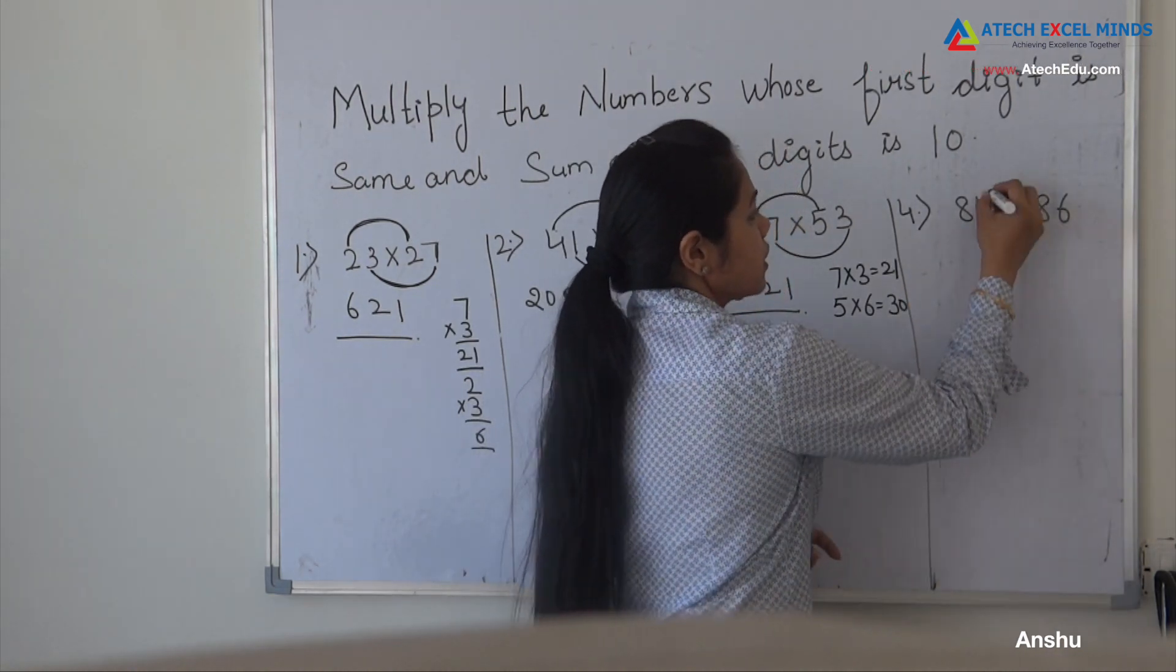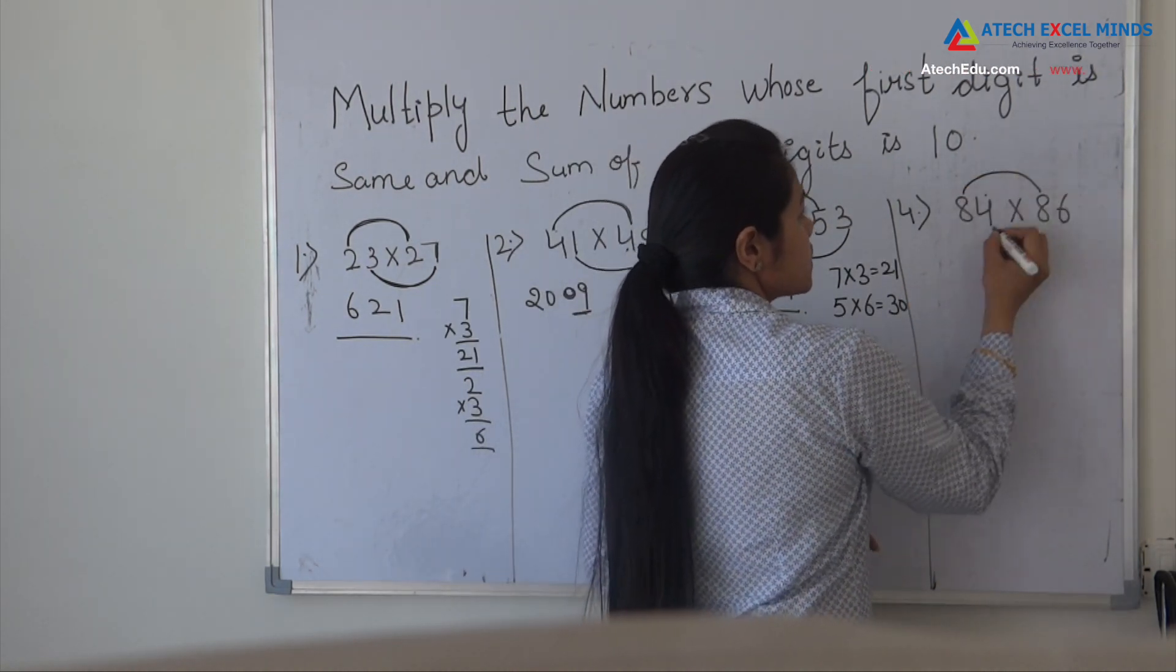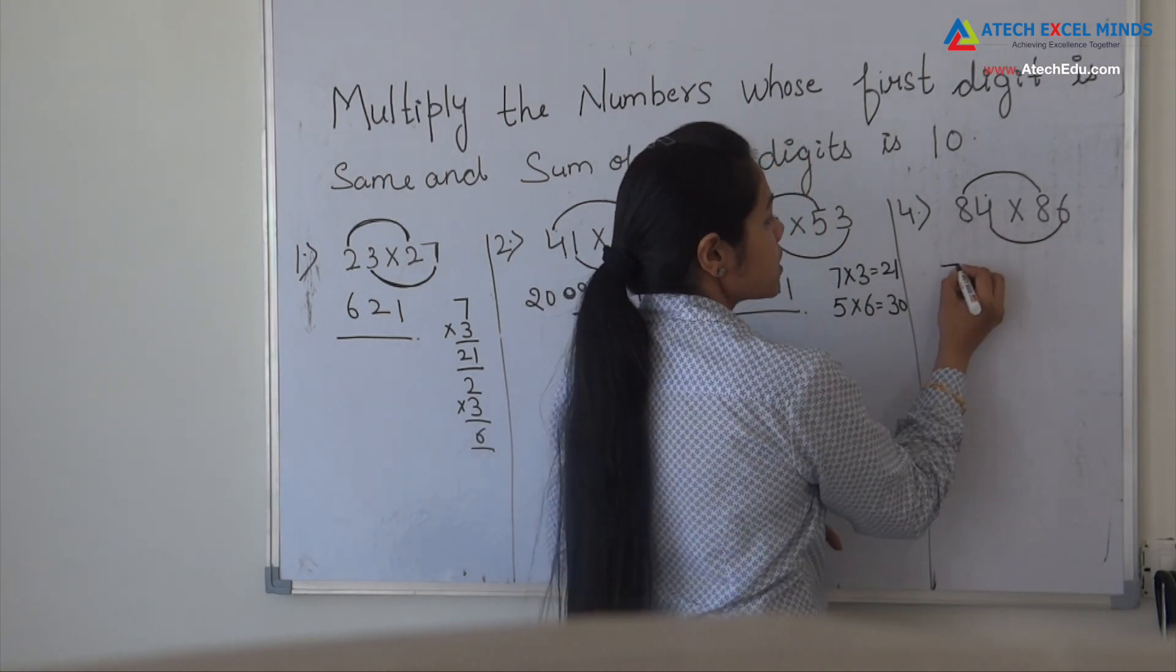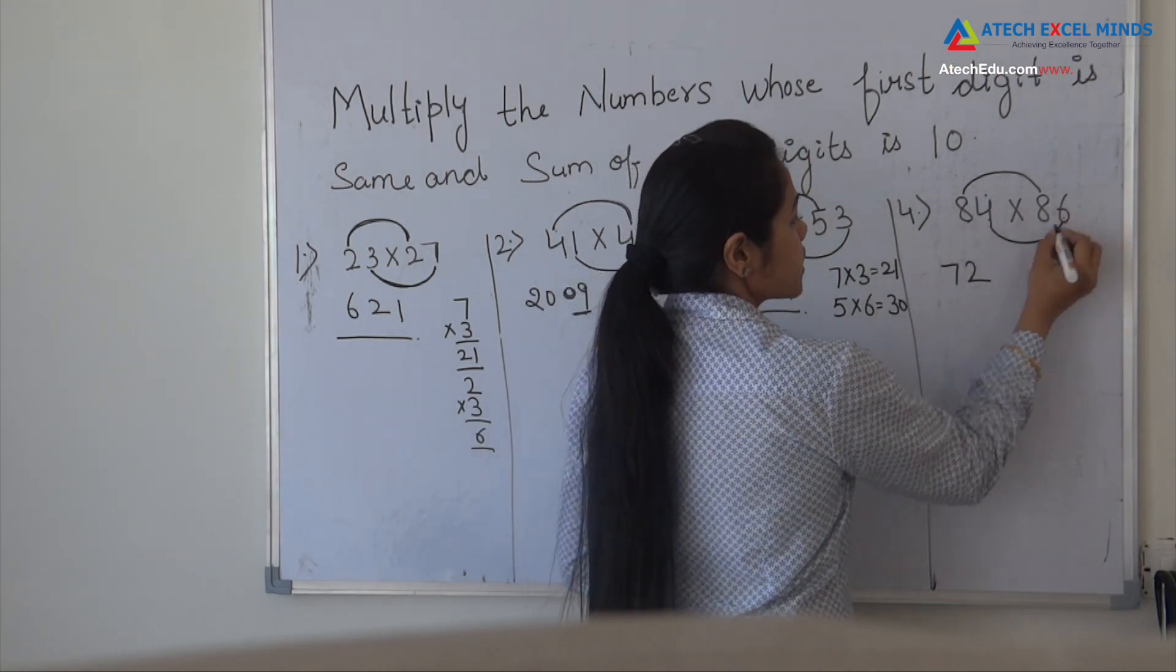Similarly here, first digit is same and the sum of unit digits is 10. So 8 times 9 is 72, and 4 times 6 is 24.